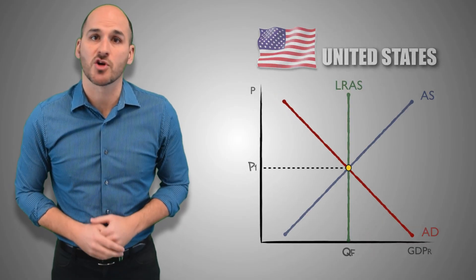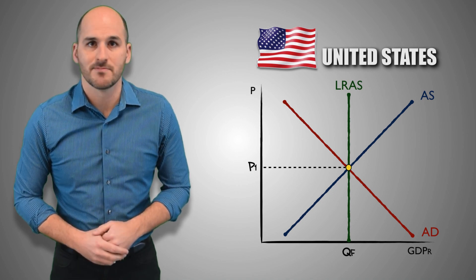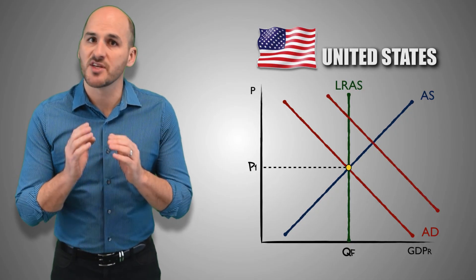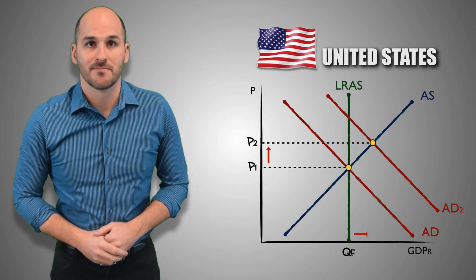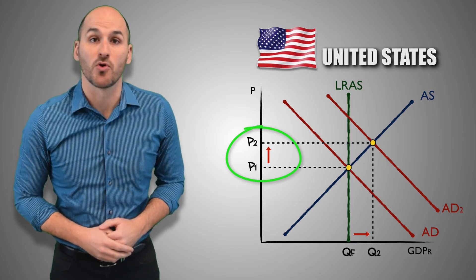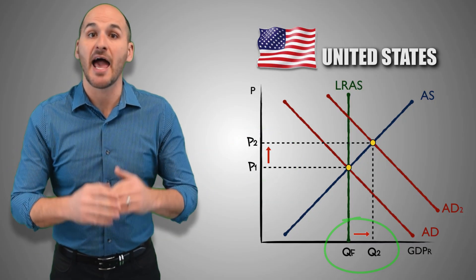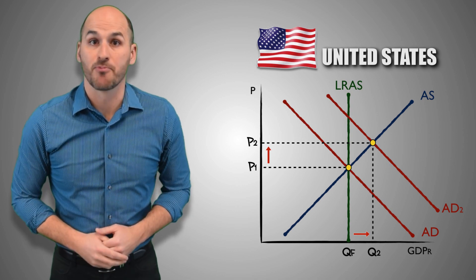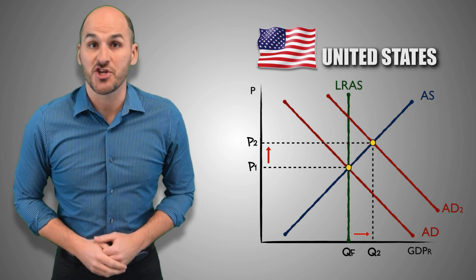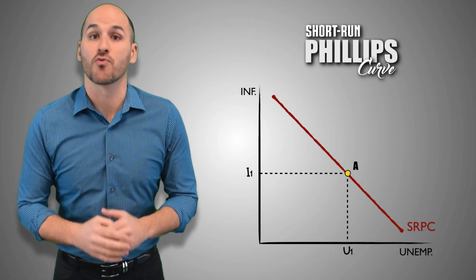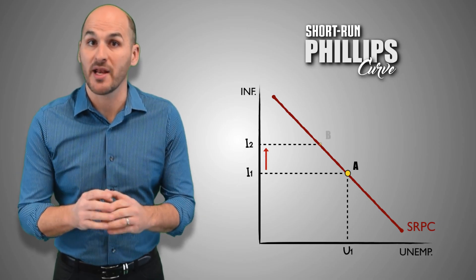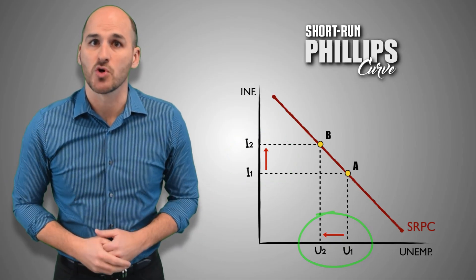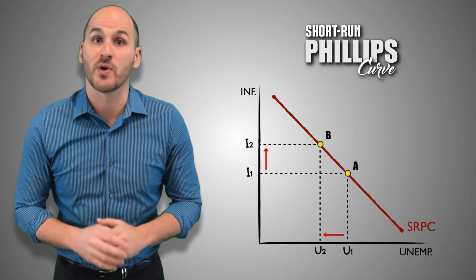For example, suppose that consumers across the United States economy see an increase in their disposable income. With more disposable income to spend, consumers will buy greater quantities of real GDP output at every price level. This increase in consumer spending will cause an increase in aggregate demand across the entire economy. As aggregate demand increases, price levels will increase through demand pull inflation and real GDP output will increase as firms boost aggregate quantities supplied to meet increased consumer demand. To produce greater output, firms will hire more workers, causing the unemployment rate to decrease. With a movement along the short run Phillips curve from point A to point B, we can conclude that the economy has experienced an increase in the inflation rate and a decrease in the unemployment rate as a result of an increase in consumer disposable income and the subsequent increase in aggregate demand.